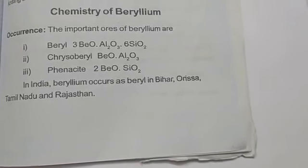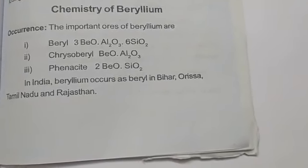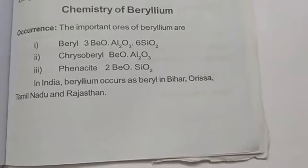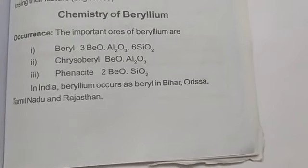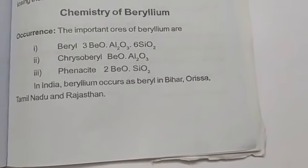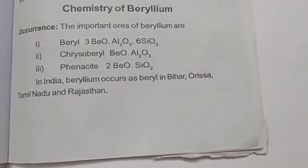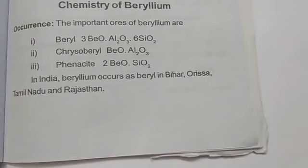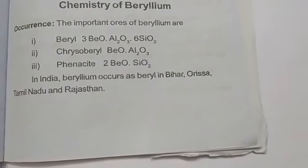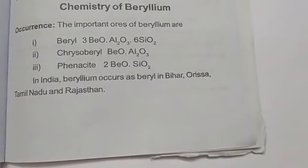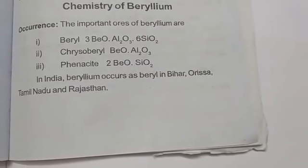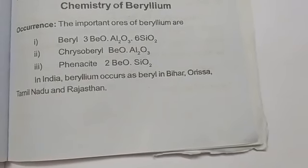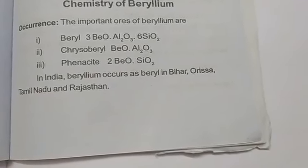Good morning students. Today in class I am going to cover the chemistry of beryllium. First, the occurrence: the important ores of beryllium are beryl, with formula 3BeO·Al2O3·6SiO2; chrysoberyl, with formula BeO·Al2O3; and phenacite, which is 2BeO·SiO2. In India, beryllium occurs as beryl in Bihar, Orissa, Tamil Nadu, and Rajasthan.